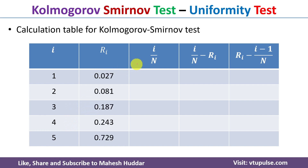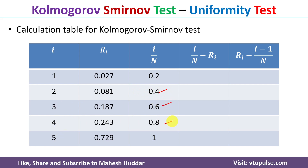Now we need to find the value of i divided by n. For the first case, i is 1 and n is 5, so 1 divided by 5 is 0.2. Then 2 divided by 5 is 0.4, 3 divided by 5 is 0.6, 4 divided by 5 is 0.8, and 5 divided by 5 is 1.